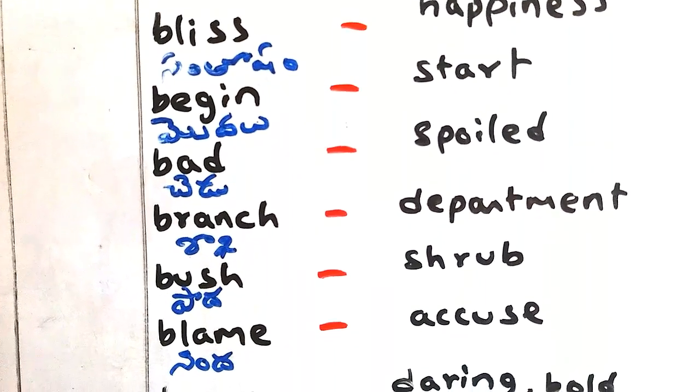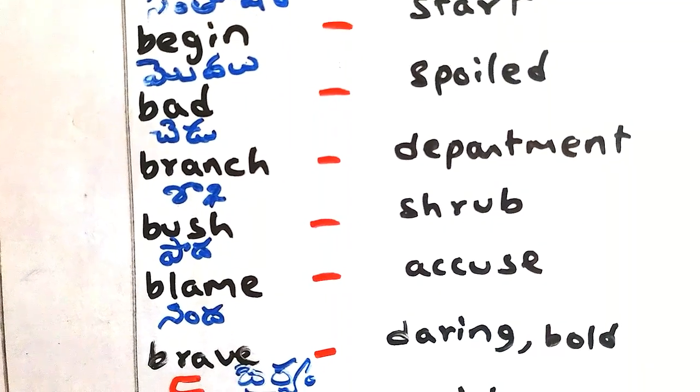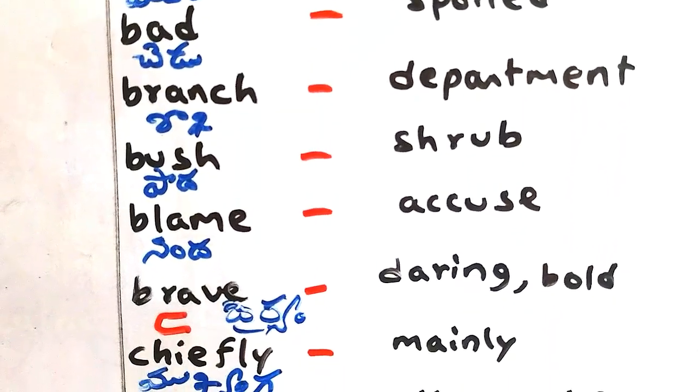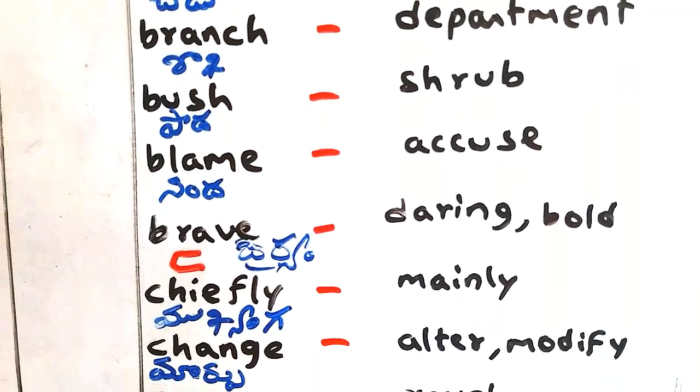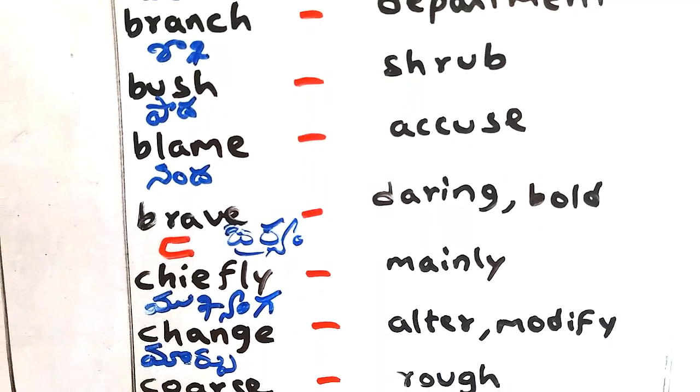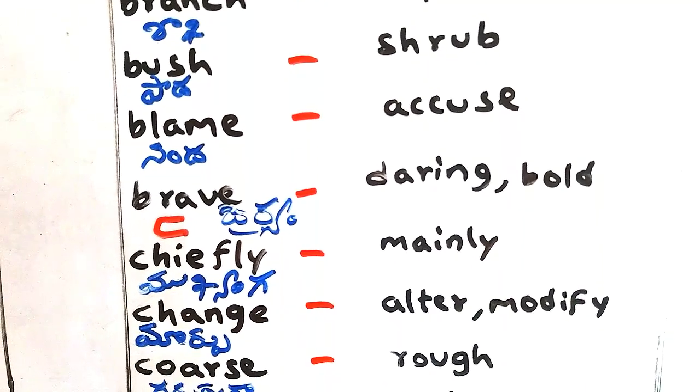Branch - saka, department. Bush - pada, shrub. Blame - ninda, accused. Brave - daring or bold.